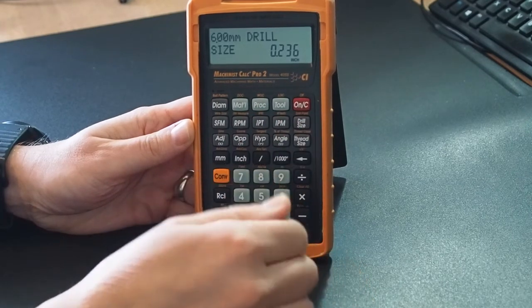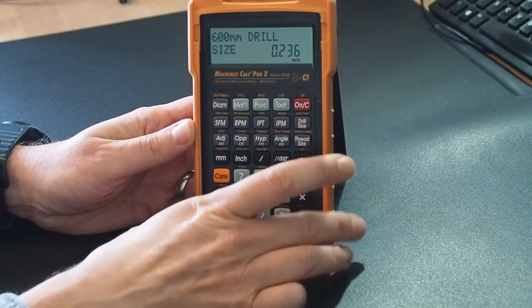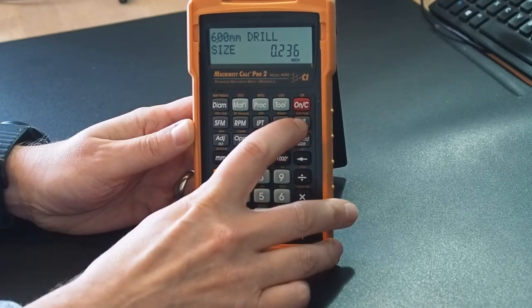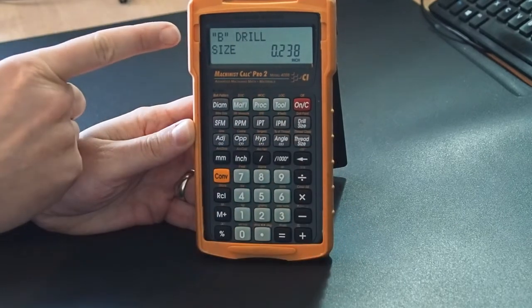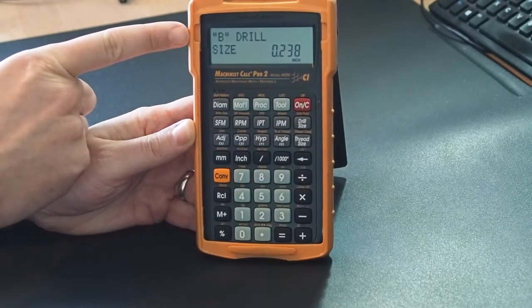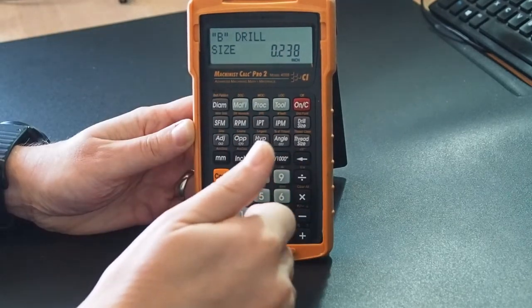But we may want to convert that into a letter size as well. A couple of ways we can do this - we can just press drill size again and it's moved up to the B drill bit size there. So we've got our size, but if we want to change that now, what we can do is use these buttons here.